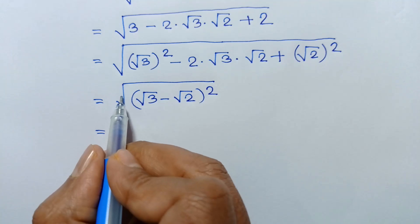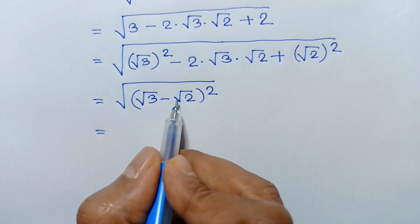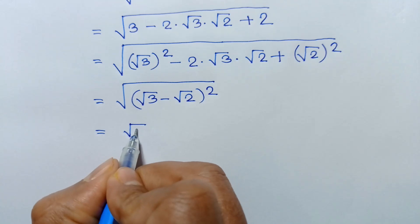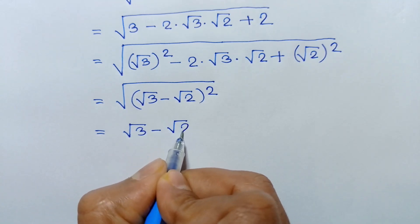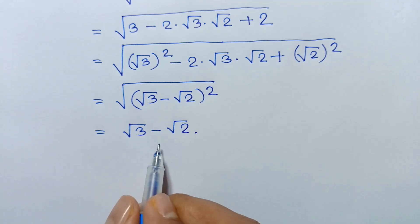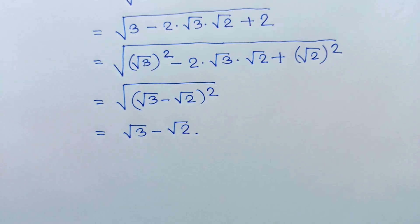The square root and the square cancel, so the result is square root of 3 minus square root of 2. This is the simplified value of the given expression. If you like this video please subscribe to my channel, thanks for watching.